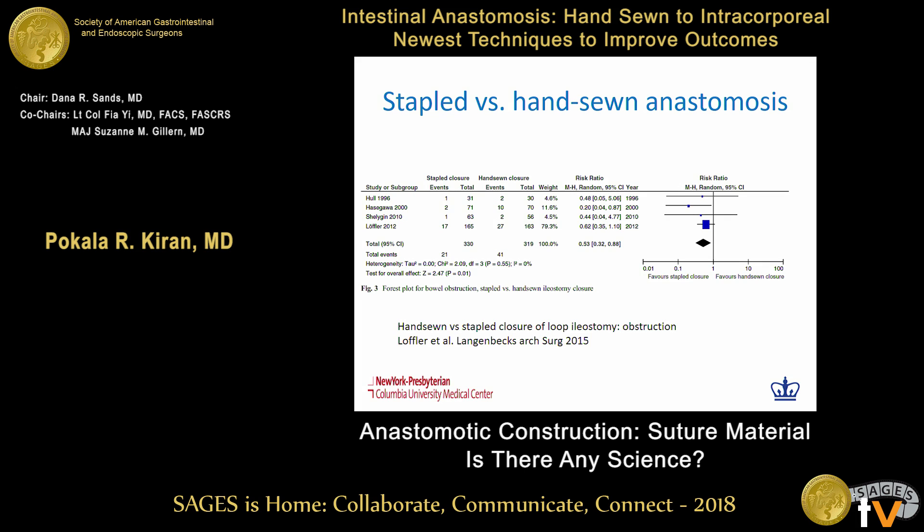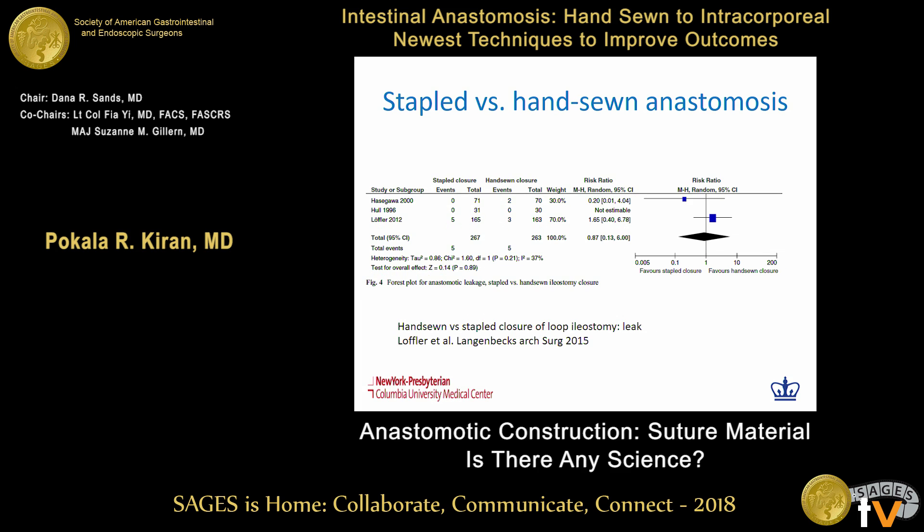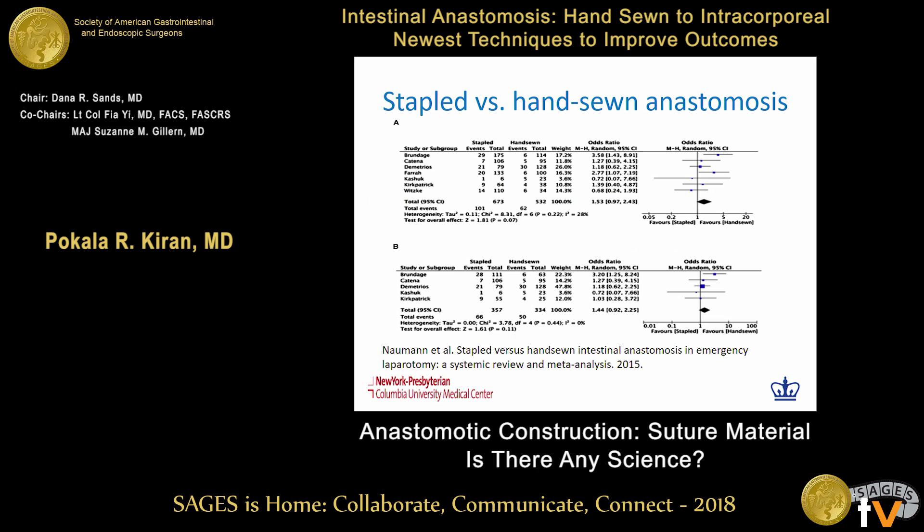Looking at data comparing stapled versus hand-sewn anastomosis: a meta-analysis of hand-sewn versus stapled anastomosis for loop ileostomy closures found that stapled anastomosis may have a lesser risk for obstruction, perhaps because of the longer anastomosis created, but there was no difference in leak rates. Similarly, in emergency surgery, another meta-analysis by Norman et al. published in 2015 found no difference between hand-sewn versus stapled anastomosis in terms of leak rates.